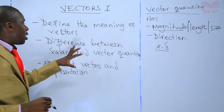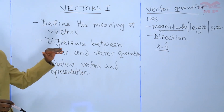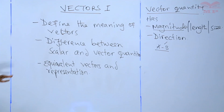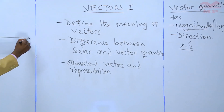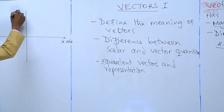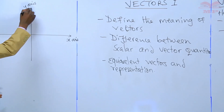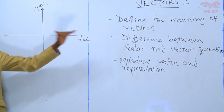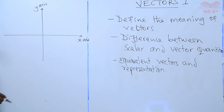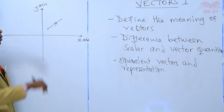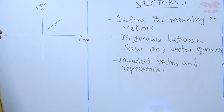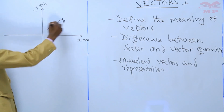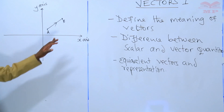Now let us look at the difference between a scalar quantity and a vector quantity. A vector quantity can be shown in a Cartesian plane, where we have the x-axis and the y-axis, with arrows showing continuity. We can draw a length and give it a direction — vectors have direction. We can label the endpoints, calling one point B and another point A, and this represents a vector quantity.